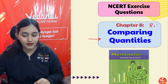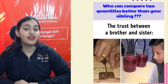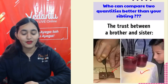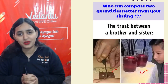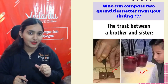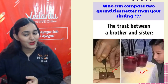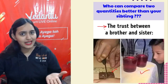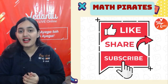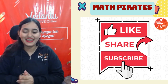Today we are going to do NCERT Exercise 8.1 of the chapter Comparing Quantities. Comparing quantities is a very important part of our life — when comparing chocolate pieces between siblings, we don't trust anyone but ourselves, right? So we need to know how to do proper comparison. I'm Sana Khan, your mathematics teacher, and I'm going to make Comparing Quantities the easiest chapter for you all.